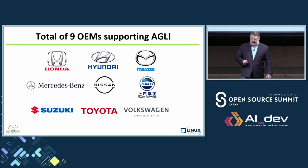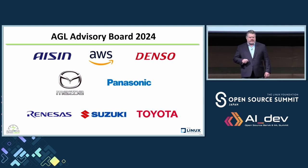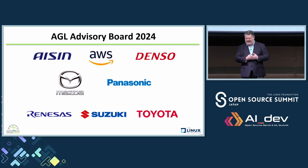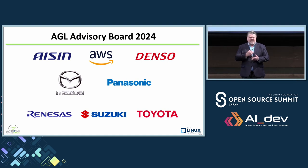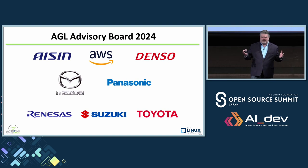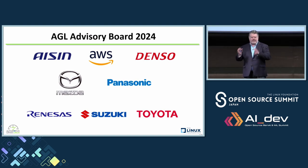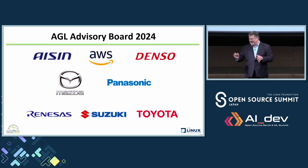I want to say a big thank you to our board of directors. I'm sure you recognize these names — these are not small companies. We've got Aishin, Amazon AWS, Denso, Mazda, Panasonic, Renesas, Suzuki, and Toyota. With their support, we are the diamond sponsors of this event, Automotive Linux Summit. Thank you to all of these board members for their support. And maybe we'll see Honda on our board in the future — we hope.